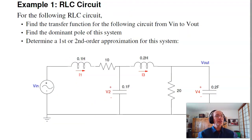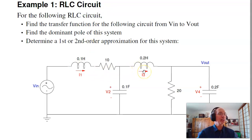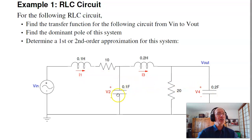Let's go through a couple of examples to show what state space does. Starting with an RLC circuit — in this case, the energy in the system is defined by the current through the inductor, (1/2)LI², and the voltage across the capacitors, (1/2)CV². So I define the energy states to be the current through the inductors i1, i3, and the voltages across the capacitors, v2 and v4. That gives me the energy in the system.